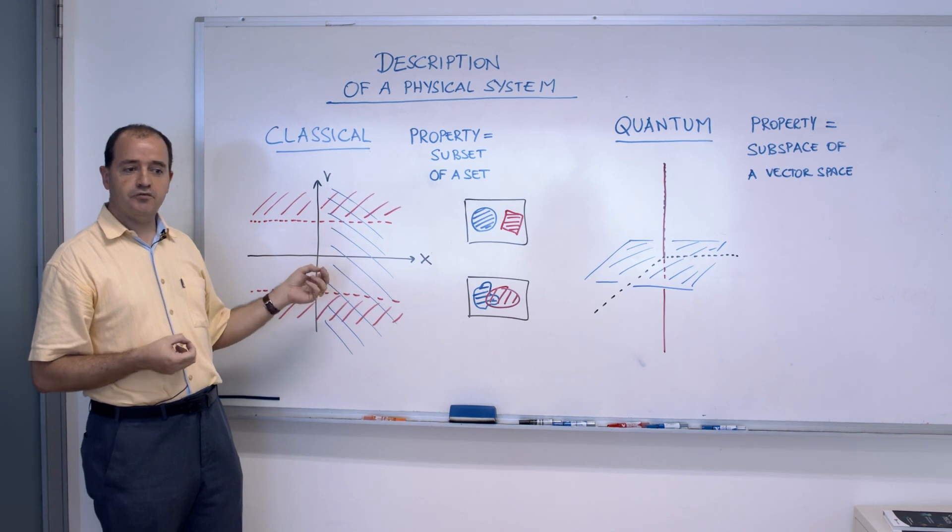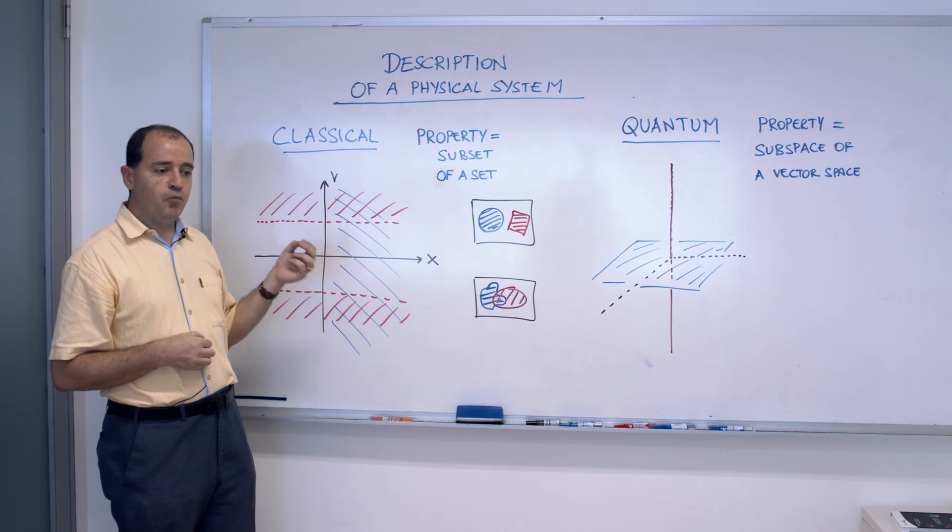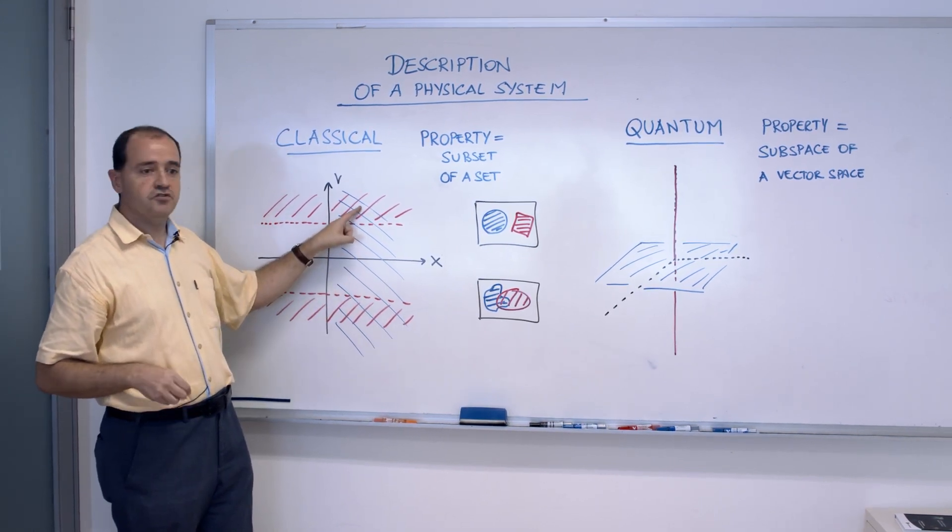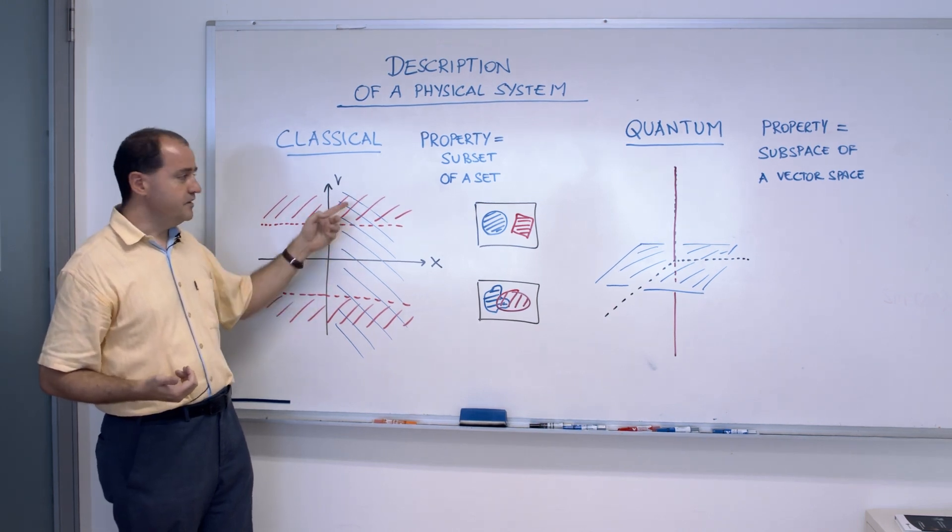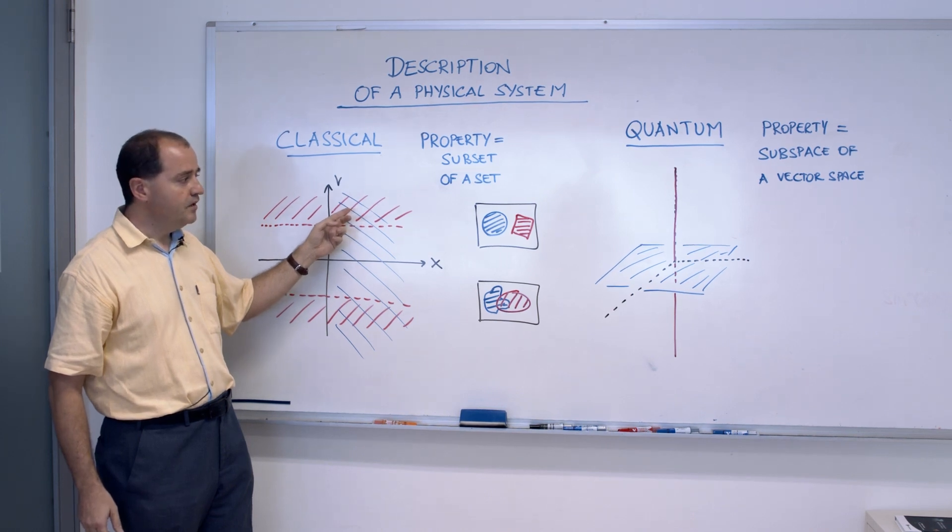then I can always find a state such that both properties are true. For instance, again here, it is true that the car is east of this line and it is true that the car is exceeding the speed.